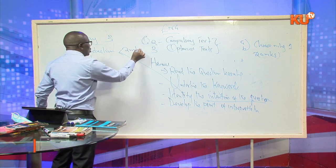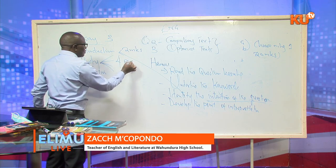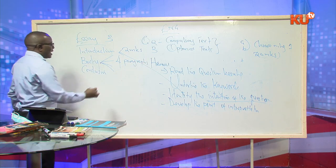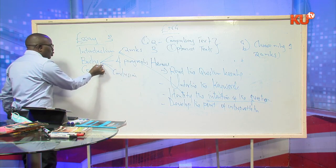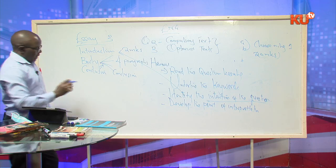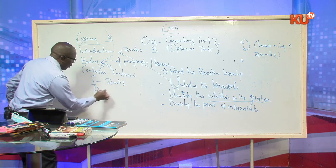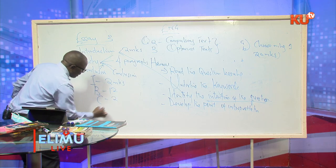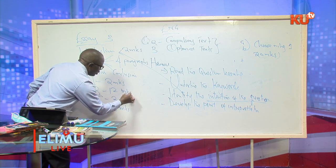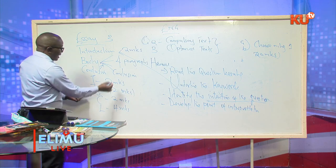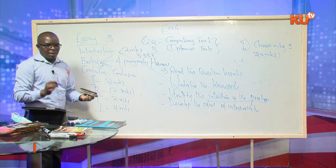The introduction is marked two marks. The body requires four paragraphs — 12 marks. The conclusion is two marks. Language is usually four marks. Twelve marks developed into four paragraphs means three marks per paragraph. How do you score the maximum three marks? One, identify the action. Two, bring out the outcome. Three, provide the background information — this is where students fail. Identify the point, give the outcome, and give the background of the point.